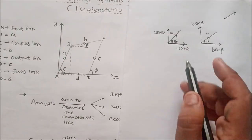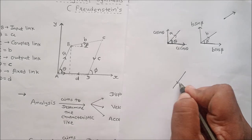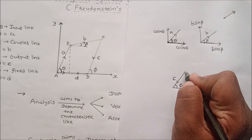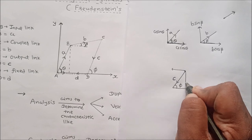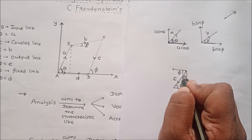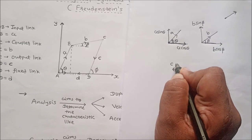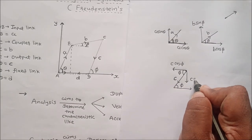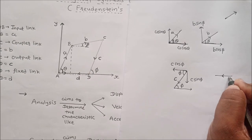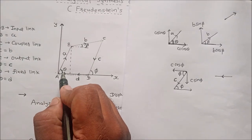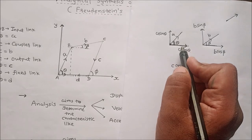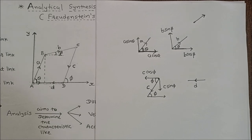Now consider link CD as a vector C making an angle phi with the x-axis. Always make components from the tail. The horizontal component is C cos phi and the vertical component is C sin phi. Consider link AD as a vector D along the left direction. The relationship between angles and link lengths is developed by considering each link as a vector with horizontal and vertical components.